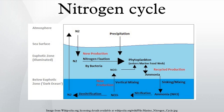Harvesting fish from regenerated nitrogen areas will lead to a decrease in nitrogen and therefore a decrease in primary production, which will have a negative effect on the system. However, if fish are harvested from areas of new nitrogen, the nitrogen will be replenished.